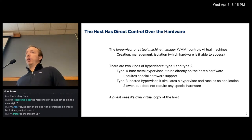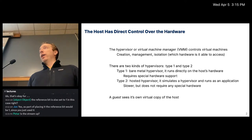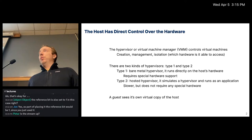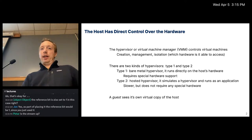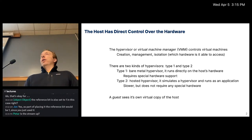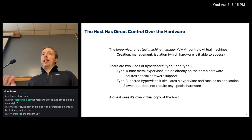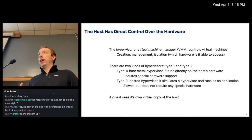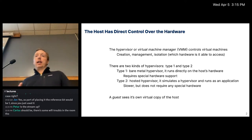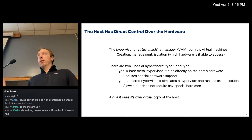Type 2 is going to be slower because you have to emulate things and it doesn't actually have any special access to hardware — it has to talk to the kernel just like your program. It doesn't require any special hardware, and it's especially useful if you need to emulate a new type of CPU that doesn't even exist yet. The guest is the actual virtual machine that's running; it sees its own virtual copy of the host.